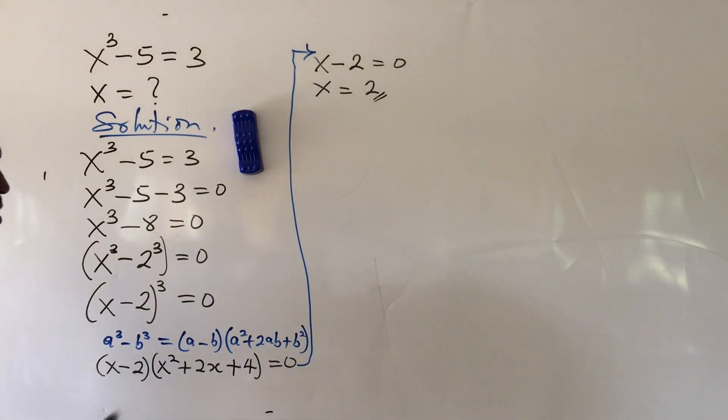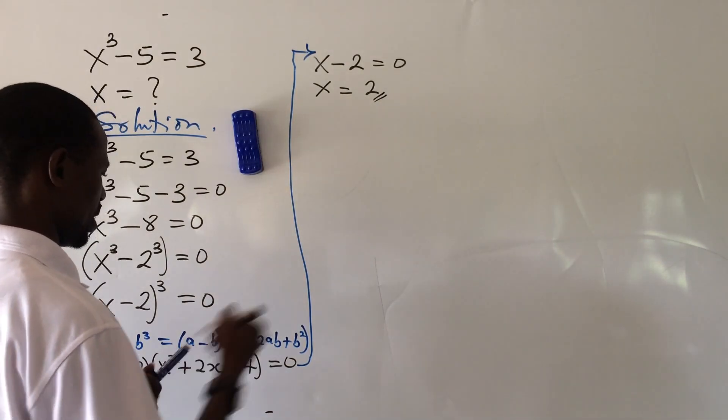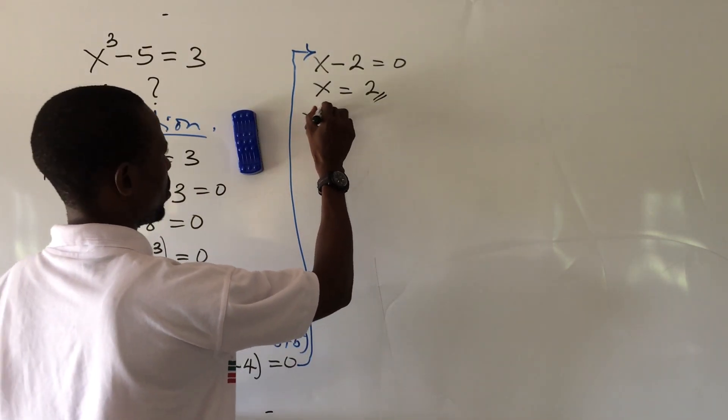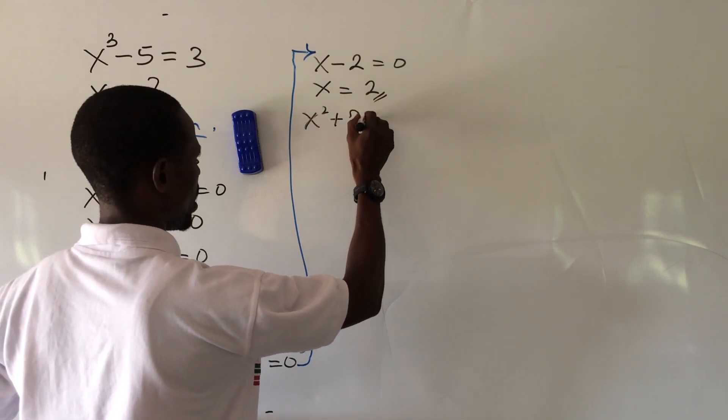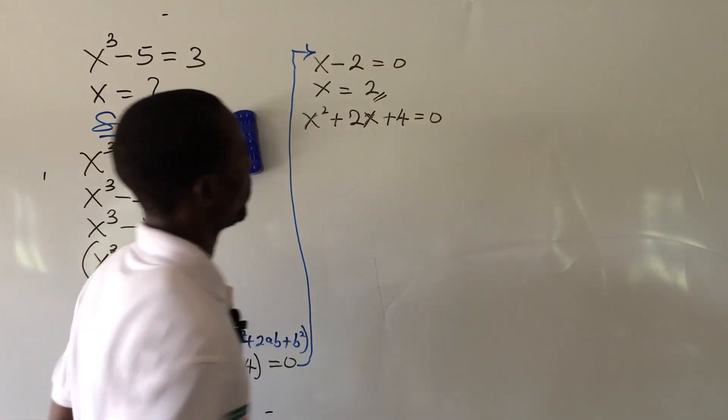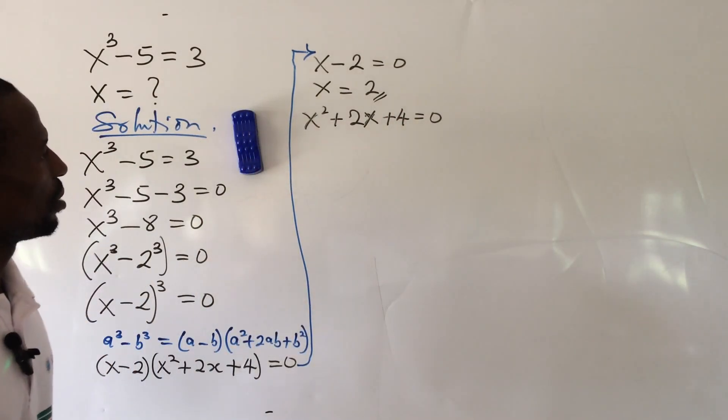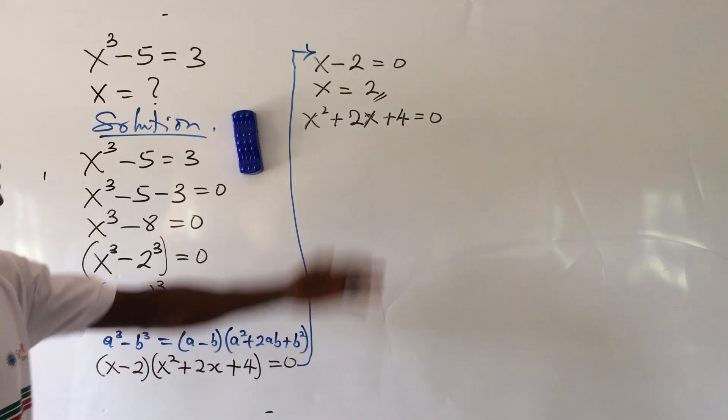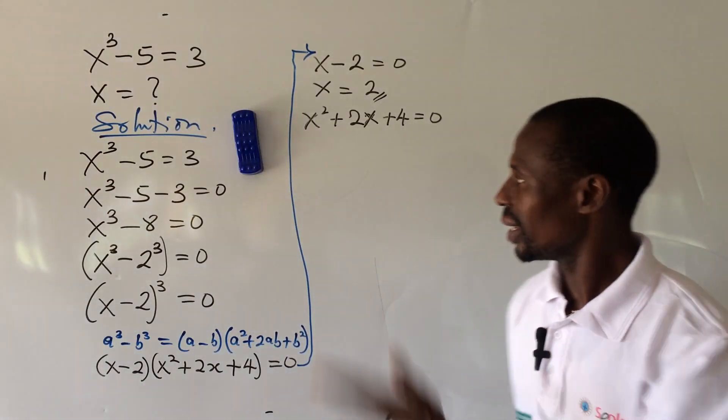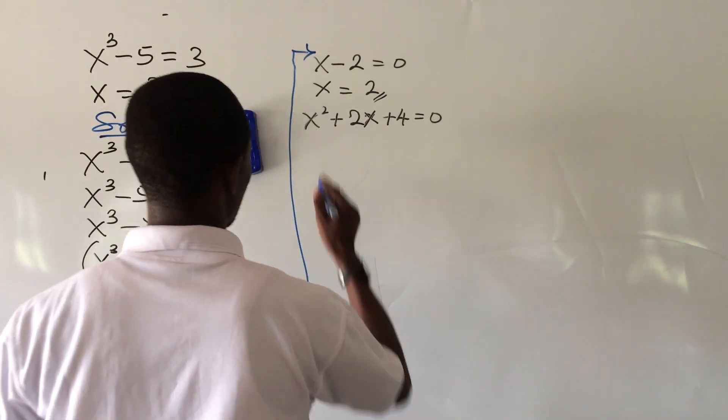So from here we take the second part of the equation which says x to the power of 2 plus 2x plus 4 equal to zero. Now if you look at this critically, we cannot use factorization method to handle this, so let's use the quadratic formula to solve this.